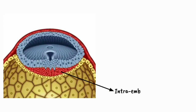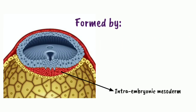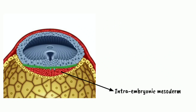Intraembryonic mesoderm is the mesoderm developed inside the embryo during the third week of intrauterine life, formed by the proliferation of the primitive streak cells. The primitive streak proliferates and lays down a new layer in between the epiblast and the newly formed endoderm to form the intraembryonic mesoderm.